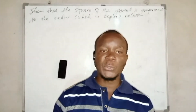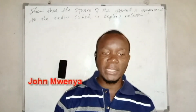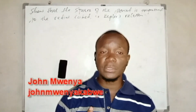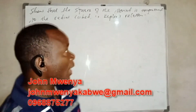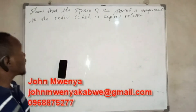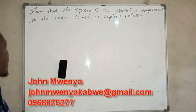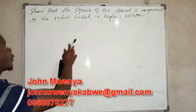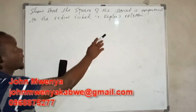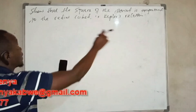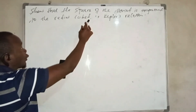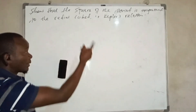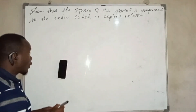Welcome. In this video, we are going to show the Kepler's relation, or we are going to derive the Kepler's relation. The question under consideration is: show that the square of the period is proportional to the radius cubed. That is the Kepler's relation.